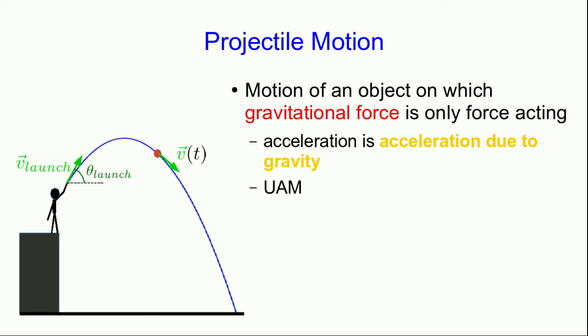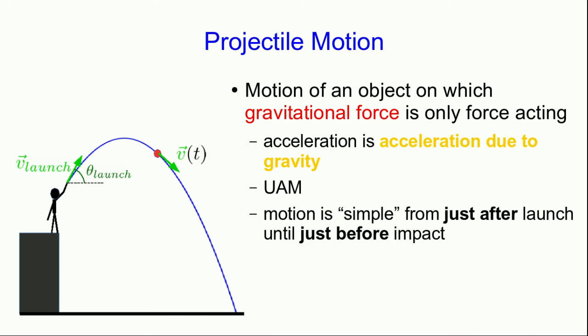And that's constant. And so the motion of such an object is uniformly accelerated motion. But this is now two-dimensional uniformly accelerated motion. And because it's uniformly accelerated motion, it's relatively simple. And it is relatively simple for as long as this thing is a projectile.